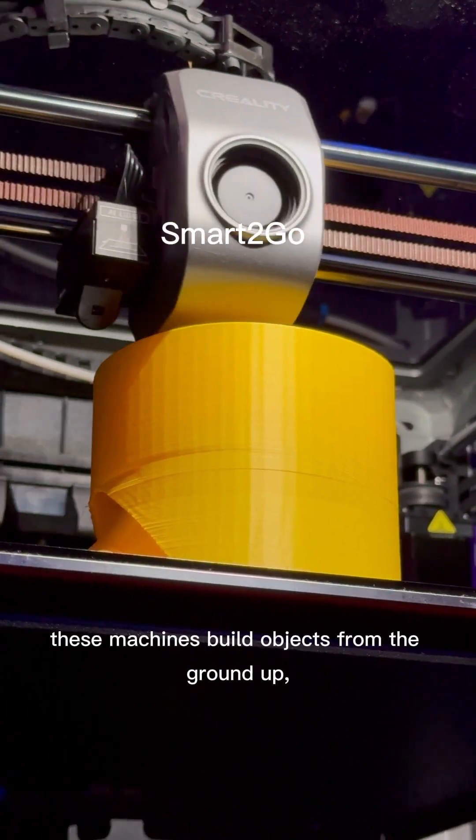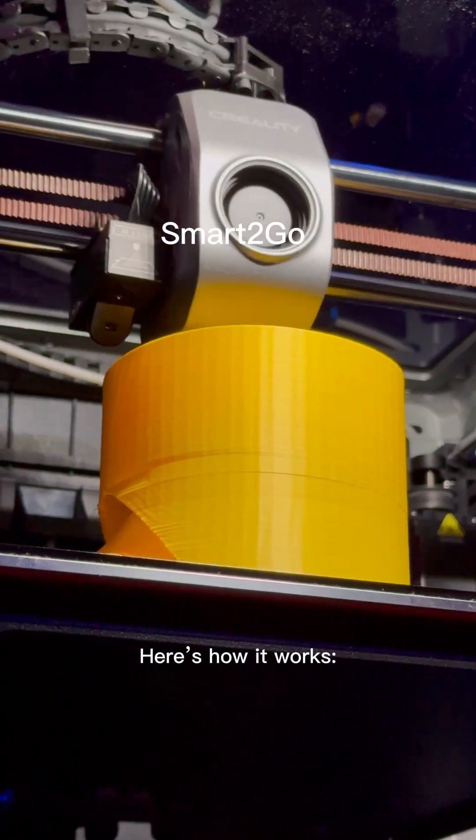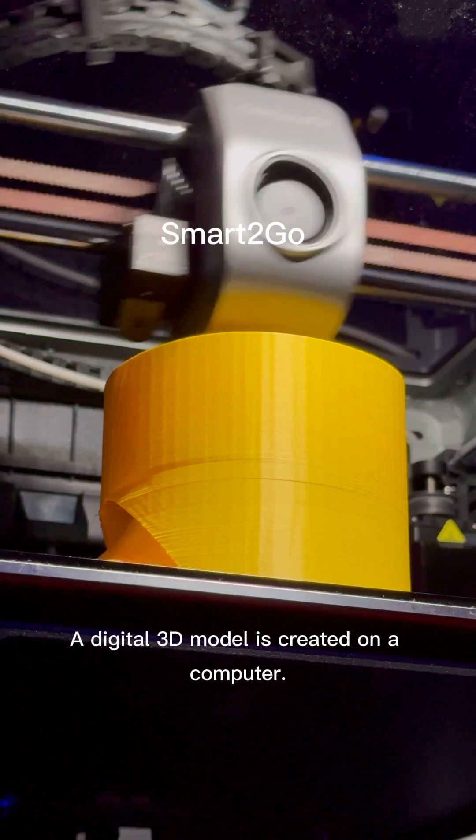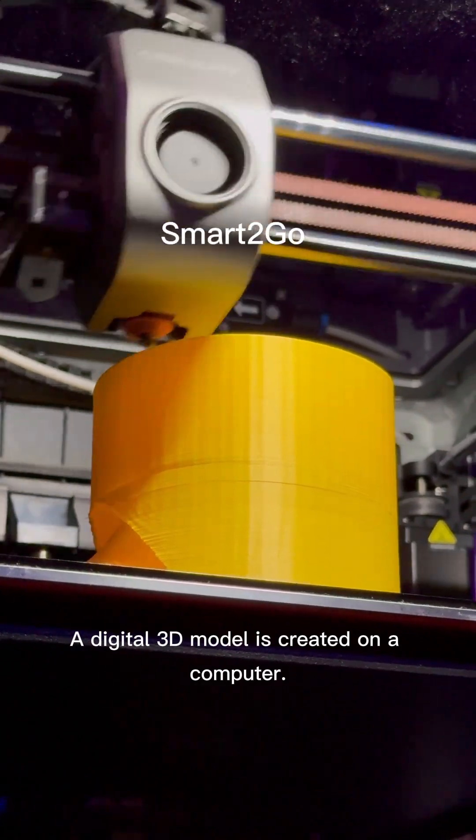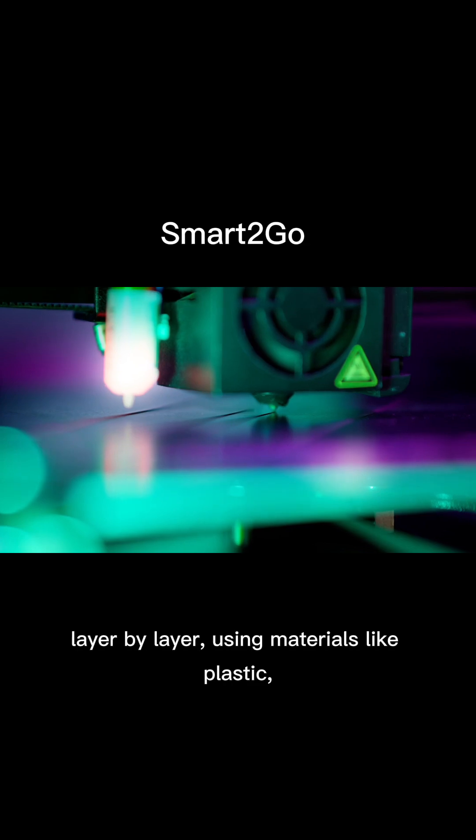These machines build objects from the ground up, adding material only where it's needed. Here's how it works. A digital 3D model is created on a computer. The printer reads this file and starts building the object, layer by layer.